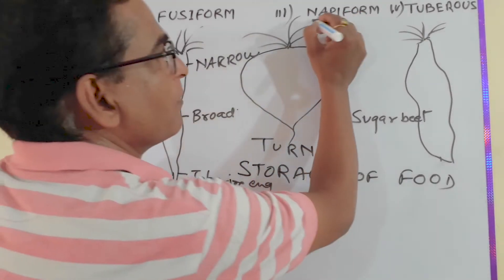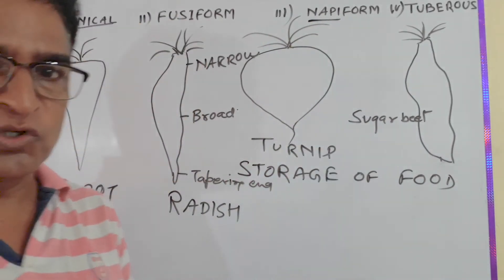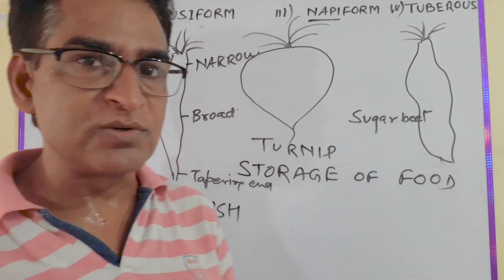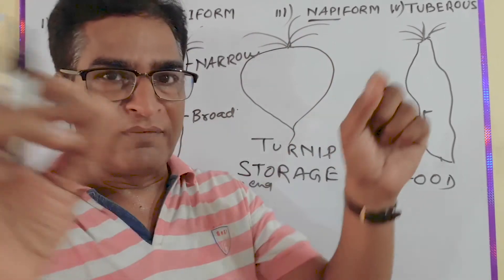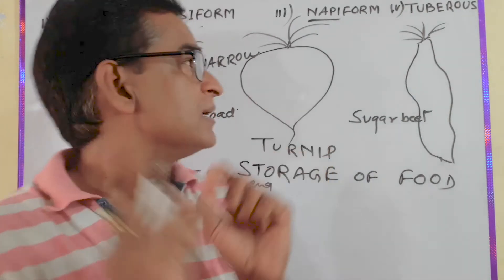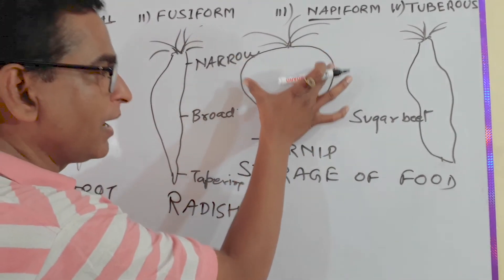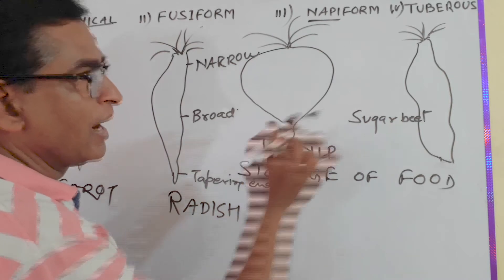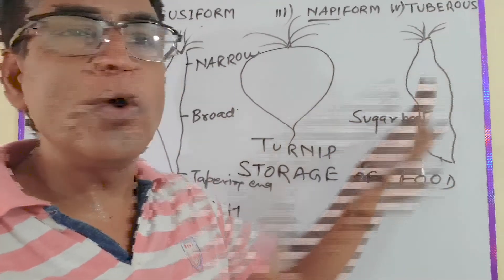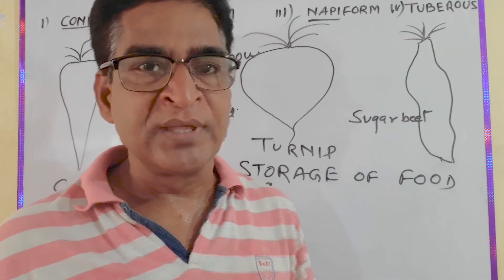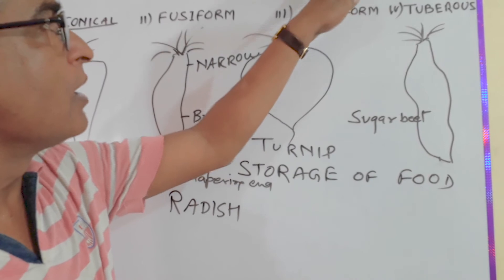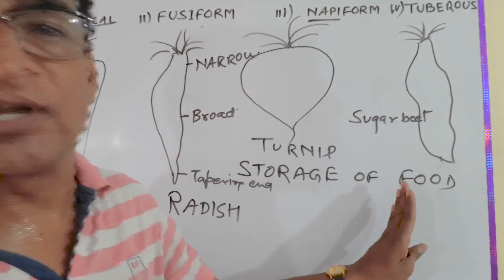In the case of napiform modification, the upper portion is broader and the lower end is tapering — simply defined as upper broad and lower tapering. And in tuberous root modifications, there is no definite shape. That is called the tuberous root modification of the tap root.